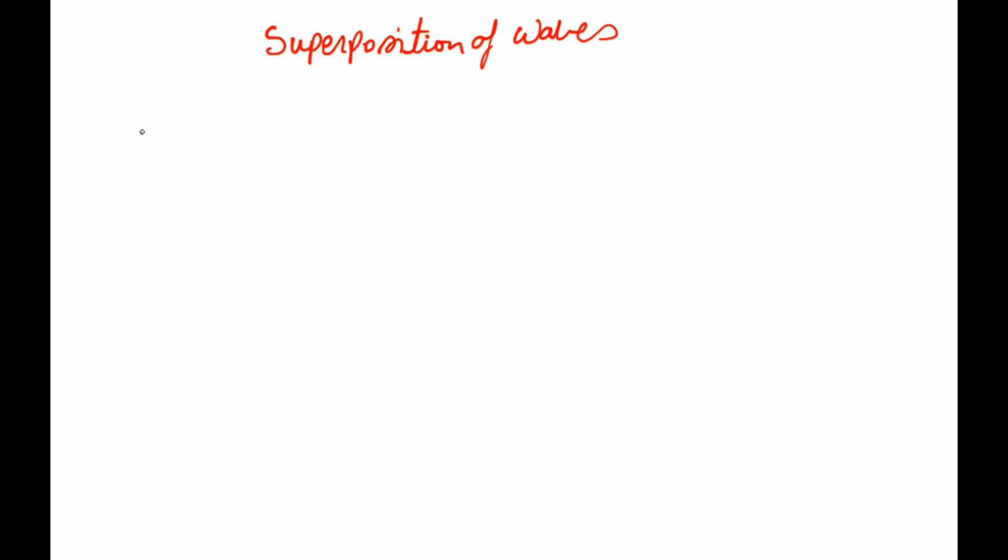So let's say if you have a wave which looks like this, and if you have another wave which looks like that, and let's say they are present at the same time and they are moving in the same direction. So they are sort of moving in the same line, which means like something like this.